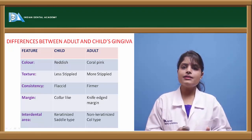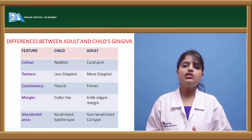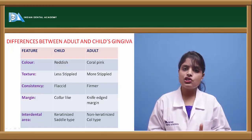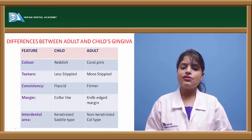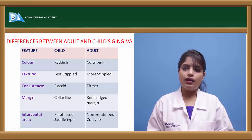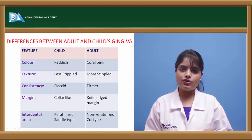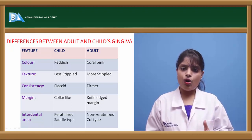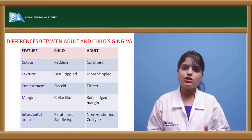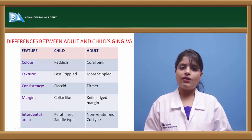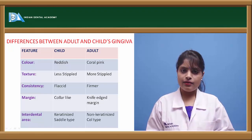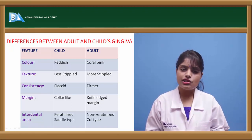There are many marked differences between adult and child gingiva. In children, the gingiva is bright red in color, whereas in adults it is coral red or coral pink in color. This is because of the increased vascularity of the gingiva in children, decreased keratinization, and a decreased number of layers of the stratified squamous epithelium which covers the gingiva — resulting in a bright red color.